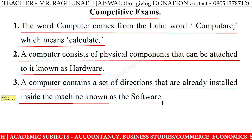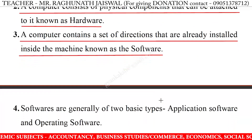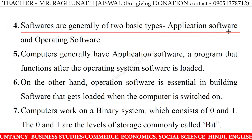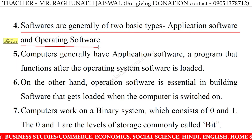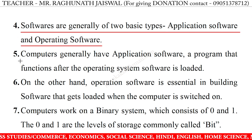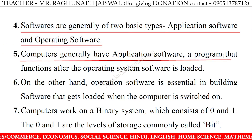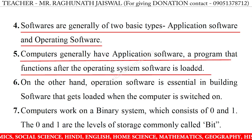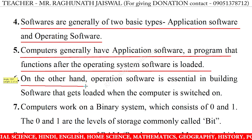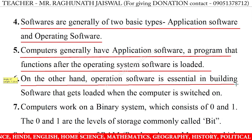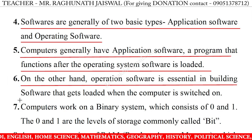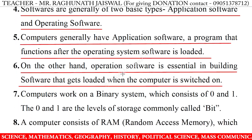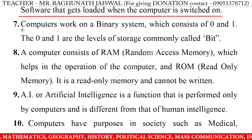3. A computer contains a set of directions that are already installed inside the machine, known as software. 4. Softwares are generally of two basic types: application software and operating software. 5. Computers generally have application software — a program that functions after the operating system software is loaded.